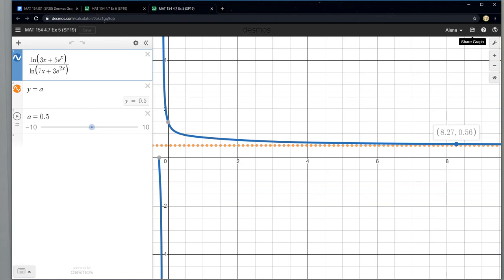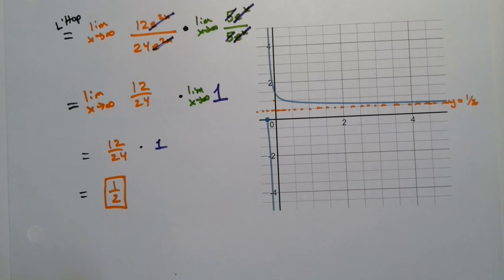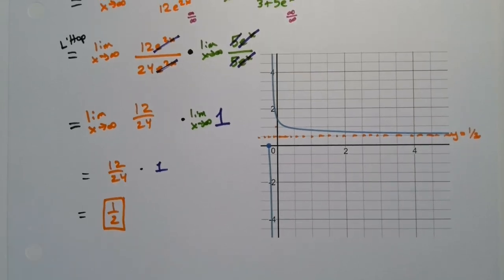We can see it here — there's the graph, and y = 1/2 is coming through right there, with the function approaching one half as x gets larger and larger. You can also verify it numerically by dragging the cursor. L'Hôpital's rule did not lead us astray, but we did use those limit properties to make things more manageable. Don't be afraid to use those properties when appropriate — they'll make your life a little bit easier.